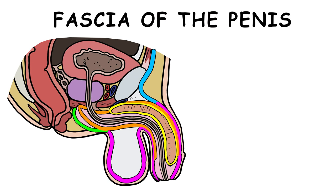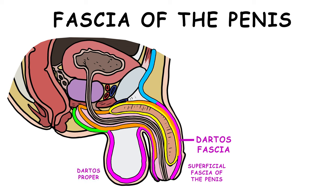Erectile tissue has fascial coverings. The dartos fascia is found in the penis and scrotum; the portion in the penis is called the superficial fascia of the penis, and the part in the scrotum is called the dartos proper. Note that the dartos fascia is continuous with Colles' fascia in the perineum and Scarpa's fascia in the abdomen.